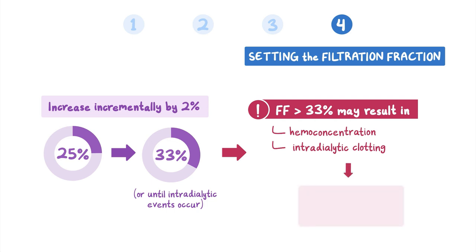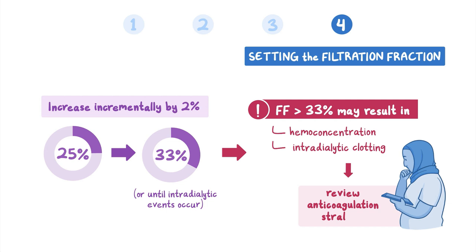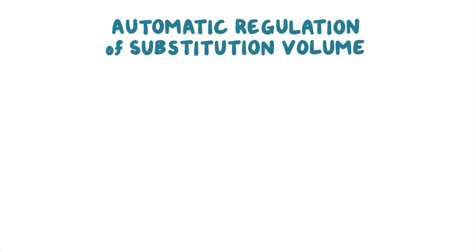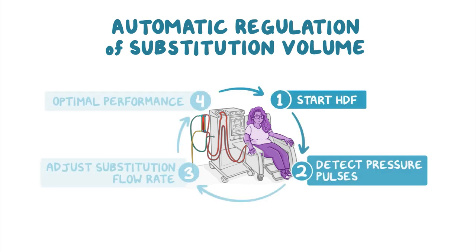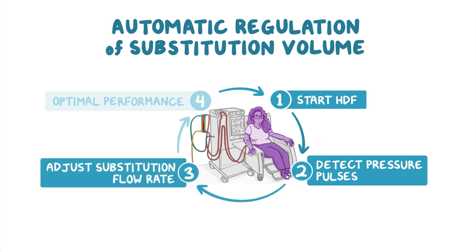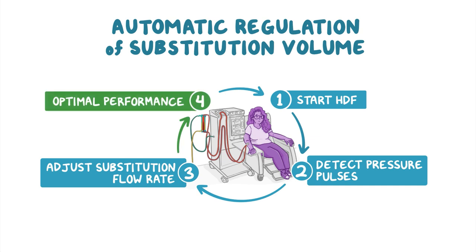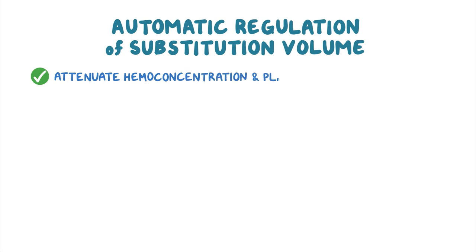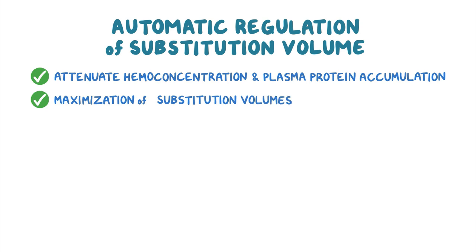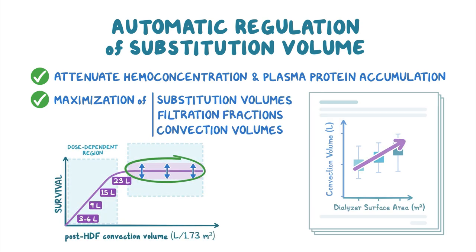Intradialytic clotting complications may require the physician to review the anticoagulation strategy. Patient-specific optimization can be refined further with automatic regulation of substitution volume, which is a feature available on some dialysis machines. Such features detect pressure changes in the extracorporeal circuit and adjust substitution flow rates accordingly in real time to optimize performance and outcomes, helping to attenuate hemoconcentration and plasma protein accumulation, allowing for maximization of substitution volumes, filtration fractions, and convection volumes for each patient.